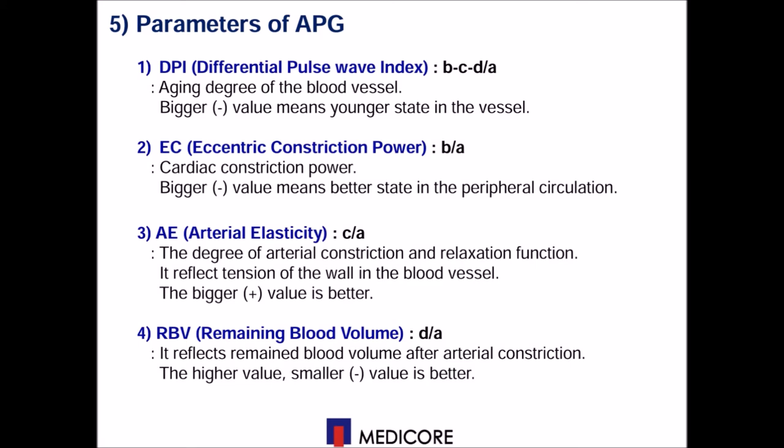For the parameters of APG, there are a total of 4 parameters. The first one is DPI, which is the total blood vessel power. This DPI value should be much more negative, which means it has strong power in the blood vessel. C means the eccentric constriction power, which indicates the cardiac pumping power from the heart to the peripheral vessel — negative values are better than positive values. A is arterial elasticity, which means how elastic the blood flow is in the vessel. If the vessel is too thick or damaged, the elasticity will be low. The last one, RBV, is the remaining blood volume, which means how much blood remains in the vessel during flow.